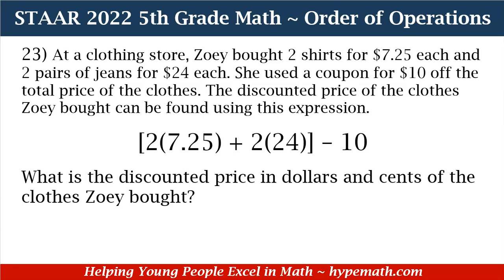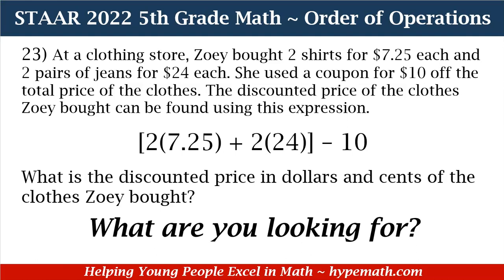Let's look at our expression again. We see that in the brackets we have 2 times 7.25, and that is for the two shirts that Zoe purchased. And then 2 times 24 is for the two pairs of jeans she purchased. That bracket is closed because we need to find that amount, and once we get that amount we are going to apply that $10 coupon. That's why we're subtracting 10. The first thing we are going to ask ourselves is: what are we looking for?